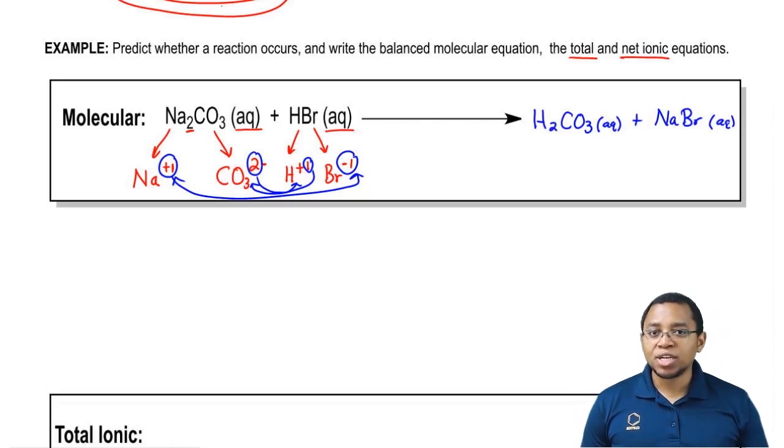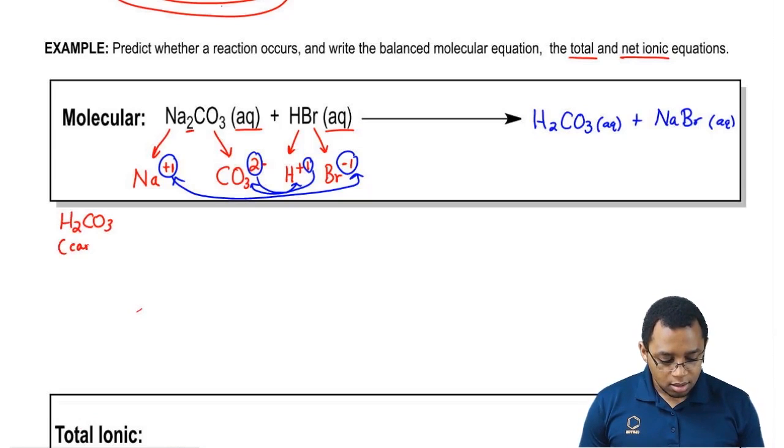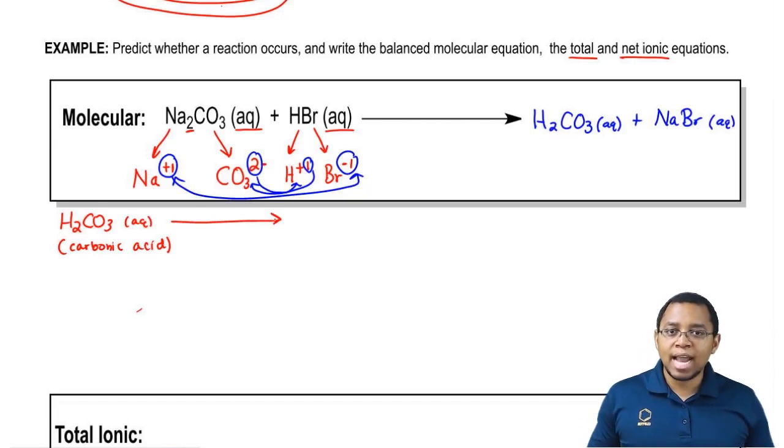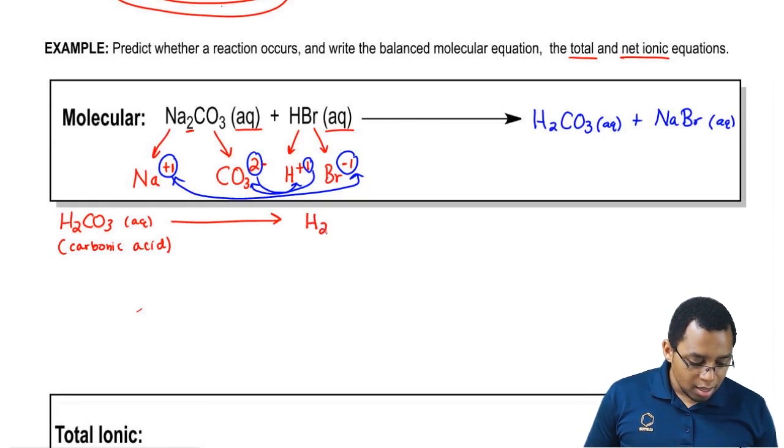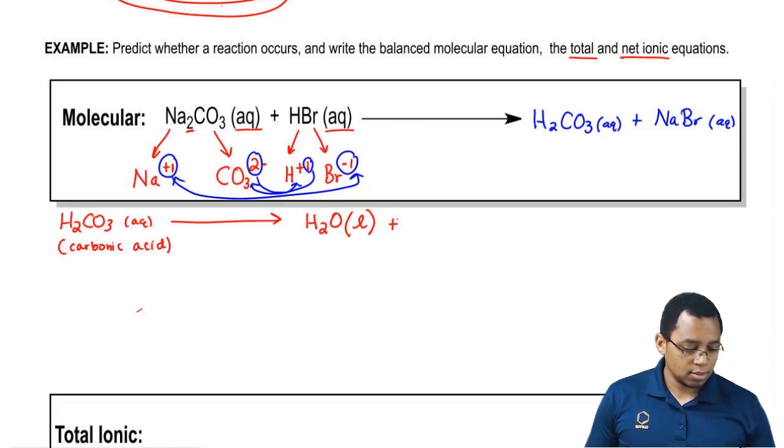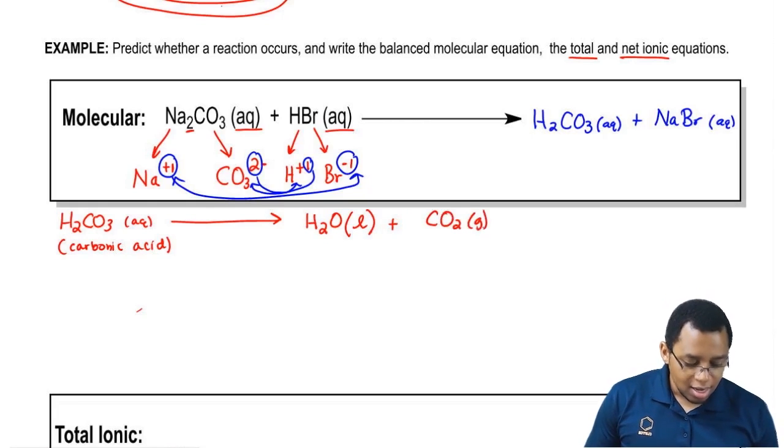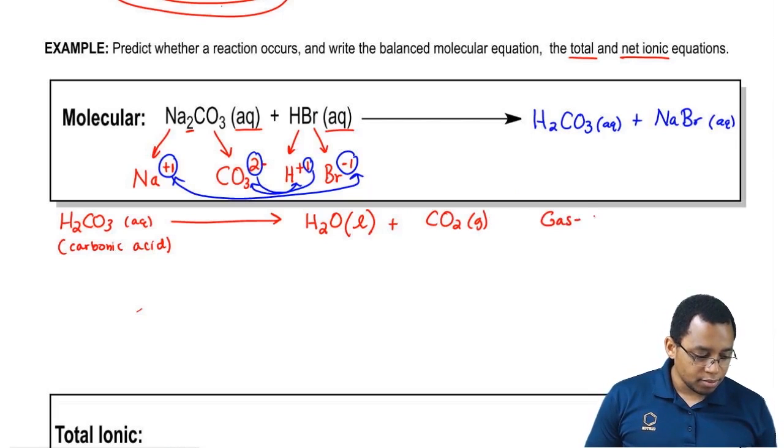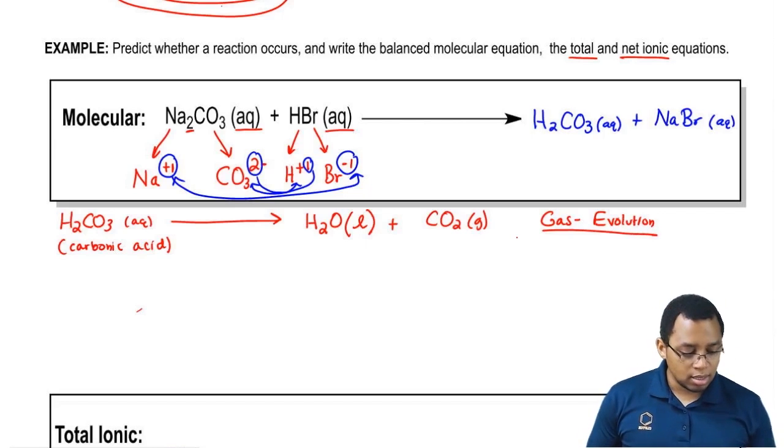But here there's a little thing that happens. Here we created H2CO3, which is carbonic acid. And here's the thing, anytime we form carbonic acid as a product, it's going to break down even further. It's going to decompose naturally. So H2CO3 breaks down to give me water as a liquid plus CO2 as a gas. This is called a gas evolution reaction.